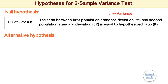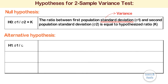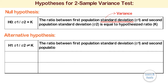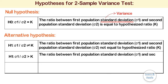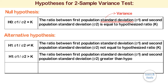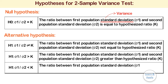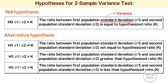Alternative hypothesis — select one of the following: H1: σ1/σ2 ≠ k, meaning the ratio does not equal the hypothesized ratio k; or H1: σ1/σ2 > k, meaning the ratio is greater than k; or H1: σ1/σ2 < k, meaning the ratio is less than k. Again, if you are testing the ratio of variances, then replace standard deviation by variance in the hypothesis.